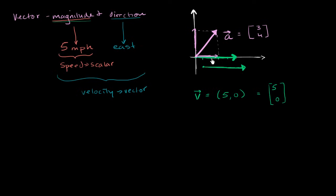You could use the Pythagorean theorem to figure out the actual length of this vector. Because this is a 3-4-5 triangle, this vector actually has a magnitude of 5. As we study more linear algebra, we're going to start extending these to multiple dimensions. We can visualize up to 3 dimensions, but in 4 dimensions it becomes more abstract — and that's why this type of notation is useful, because it's very hard to draw a 4-, 5-, or 20-dimensional arrow.